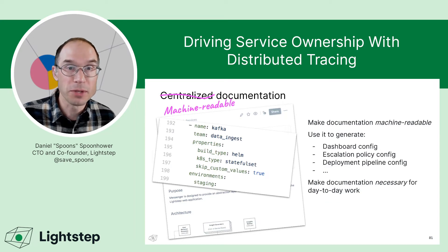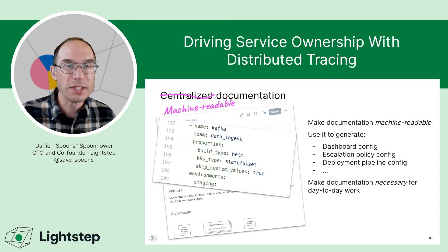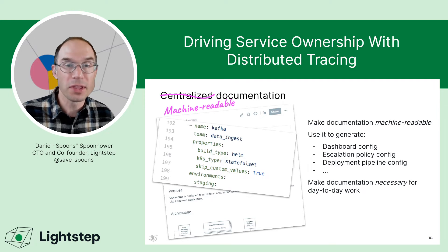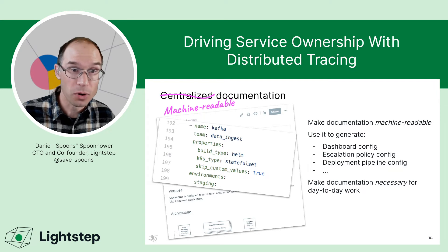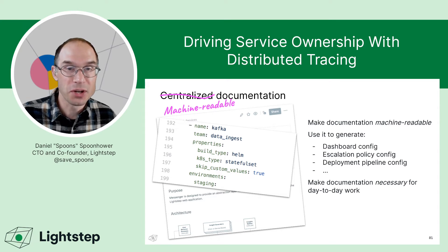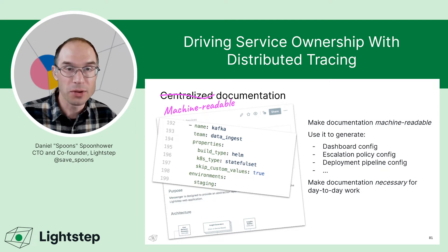Once you've centralized documentation, the next step is to make it machine-readable. If it's machine-readable, you can extract information from it and use it to generate things like dashboard configuration, escalation policies, and even the way that deployments happen. Even better, you've made that documentation necessary for day-to-day work, so developers have a really strong incentive to keep it up to date — they might not even be able to do their day-to-day work without keeping it current.